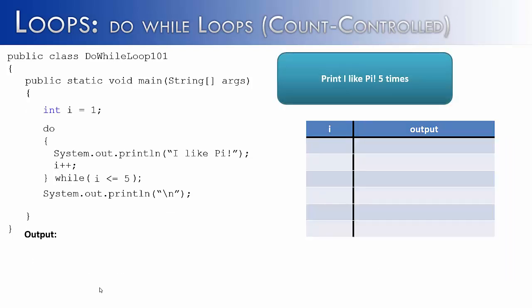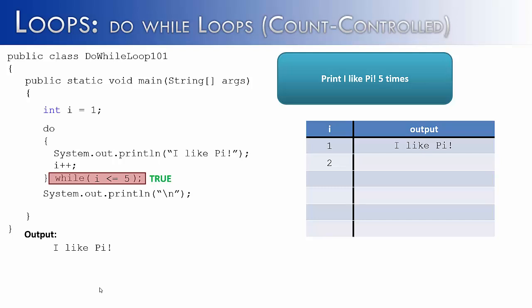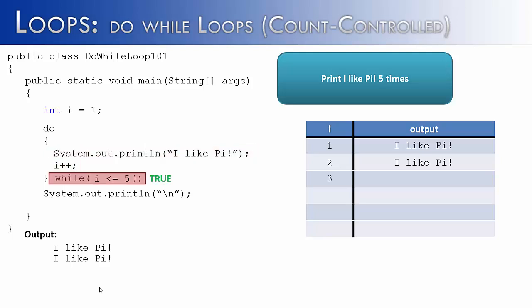Finally, what if we didn't want to print out i, but instead just wanted to print out a string like 'i like pi' five times, without worrying about what i was inside the loop? We start at 1 and count to 5, just like the first example, but instead of printing out i, we're printing out 'i like pi'. So we start i at 1, go to the do statement, the system.out.println prints 'i like pi'. i++, i is now 2, the while statement is true, go back to the do, print 'i like pi' again. i becomes 3, the condition is still true.